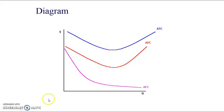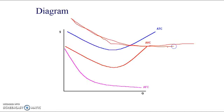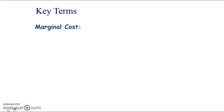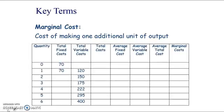When fixed costs are a high proportion of total costs, average cost curves decrease for longer before rising. You'll see this with natural monopolies later in the course. Marginal cost is simply the cost of making one additional unit of output.